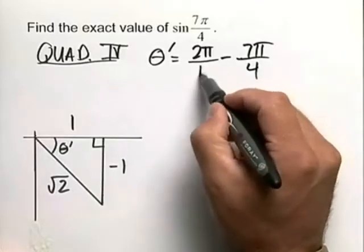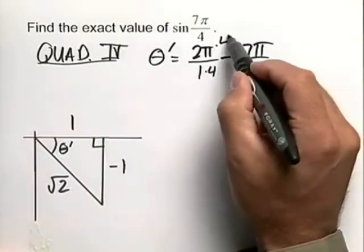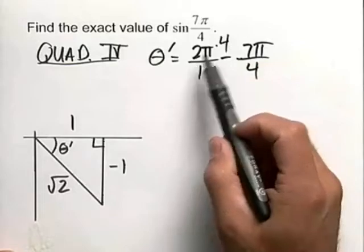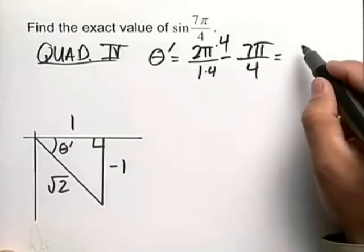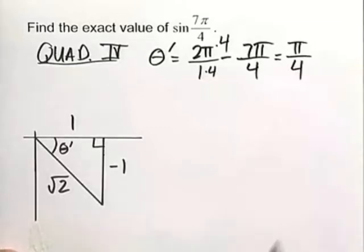Now we need to get a common denominator here of 4, so we'll multiply top and bottom by 4. We'll have 8π/4 minus 7π/4, so theta prime for our example is π/4.